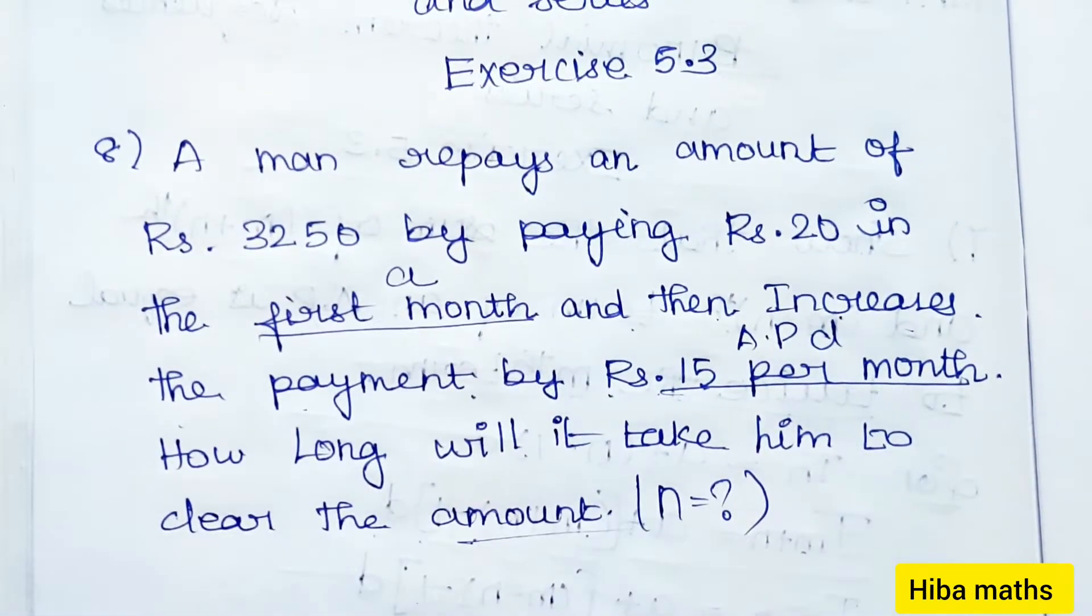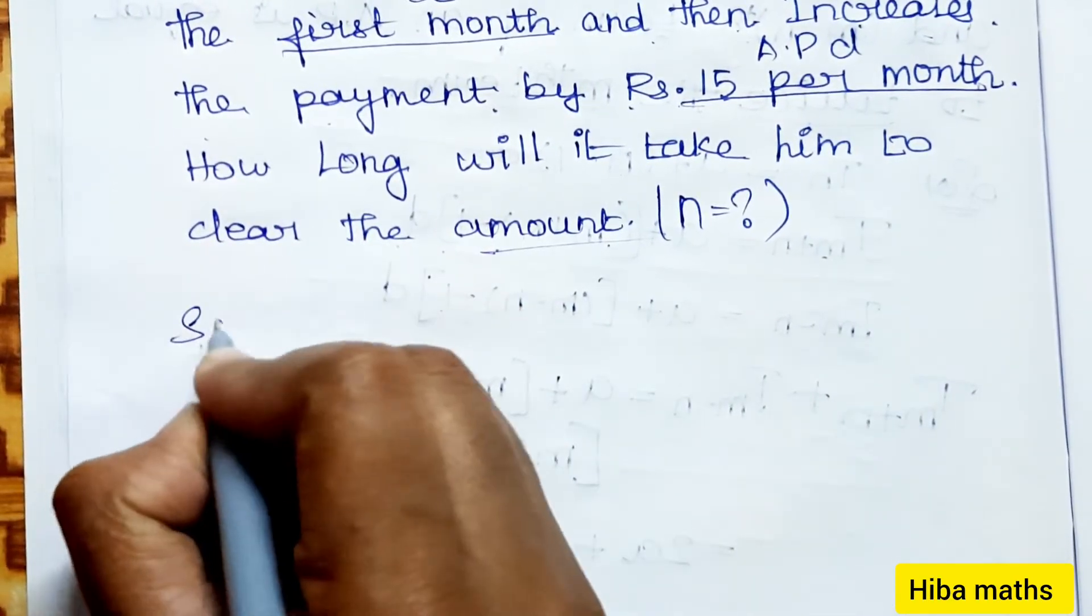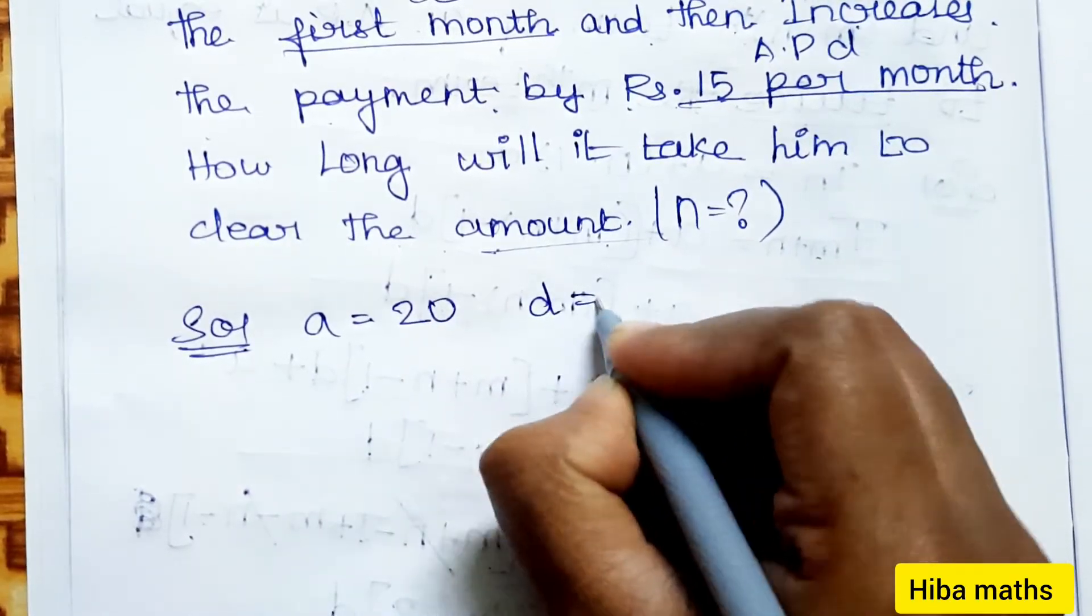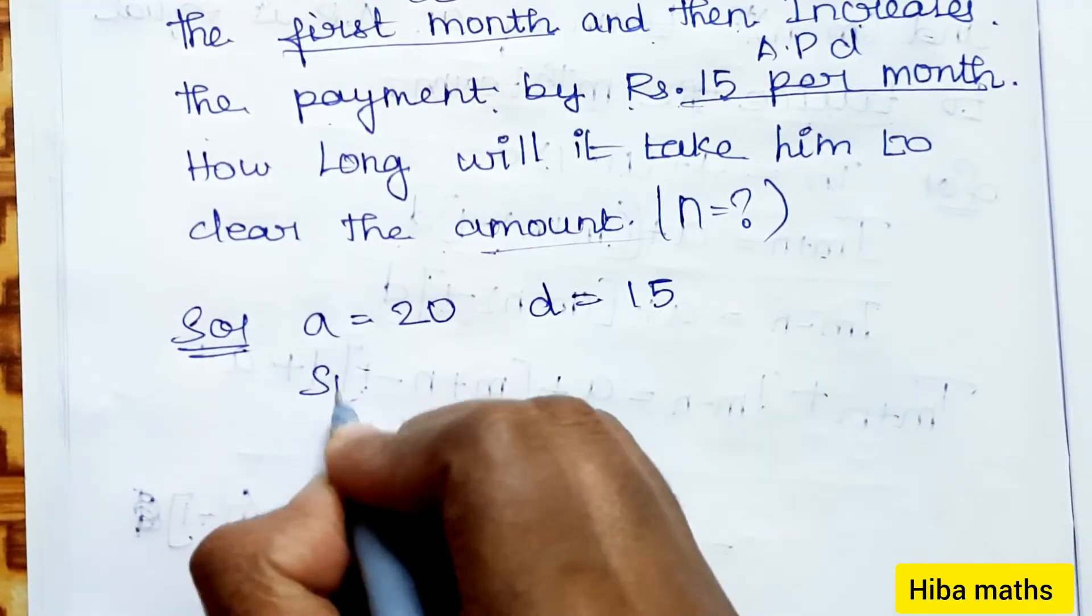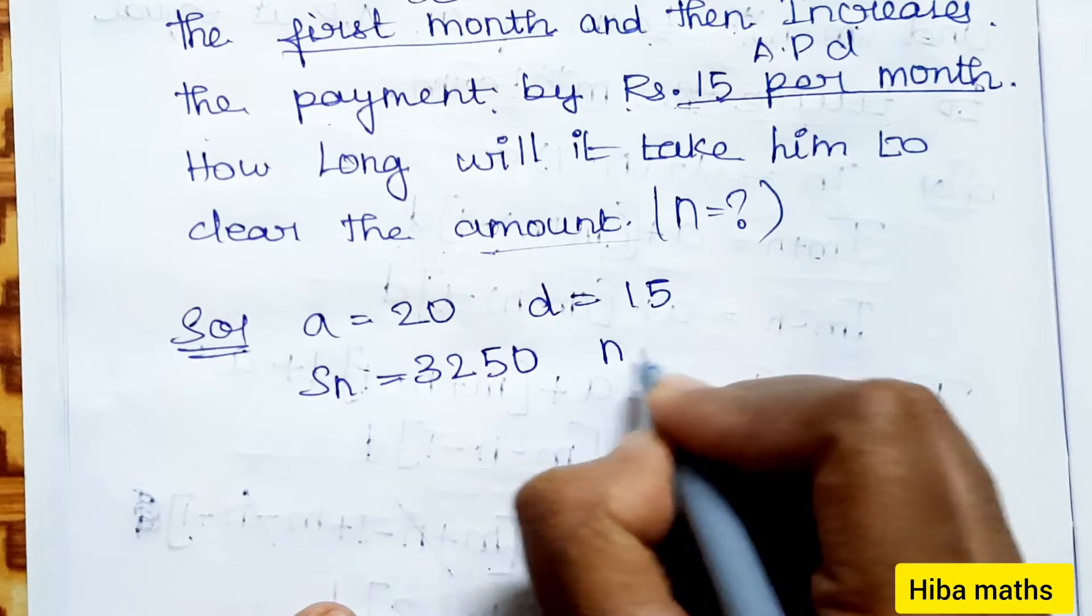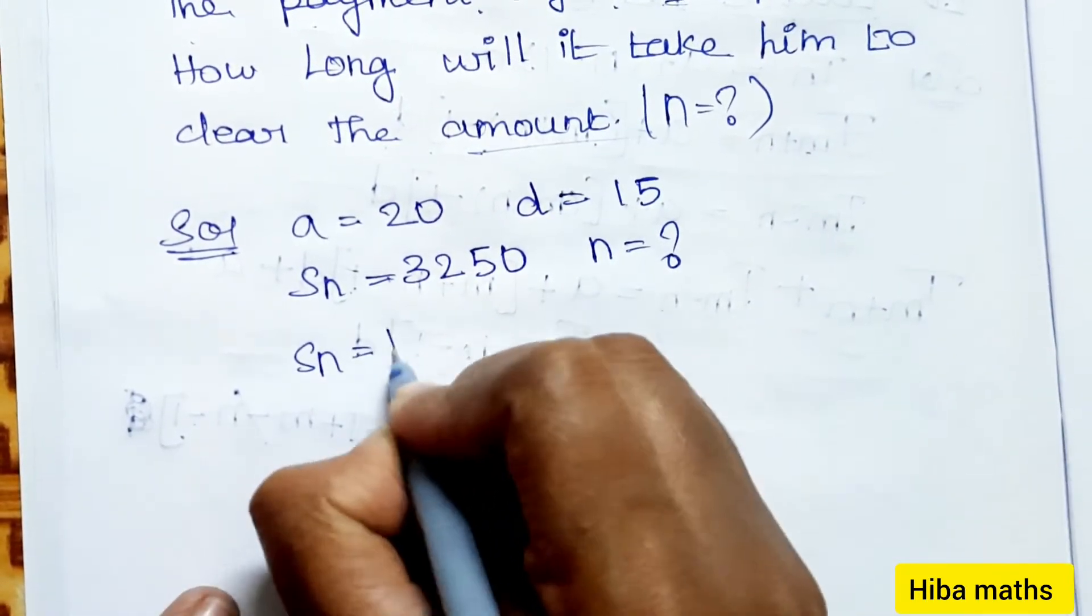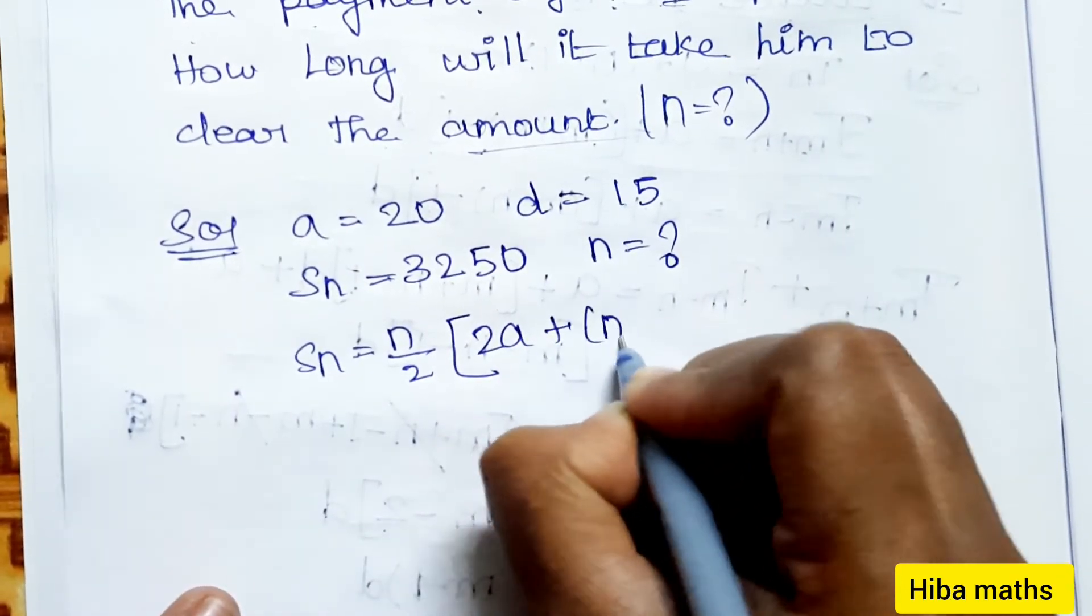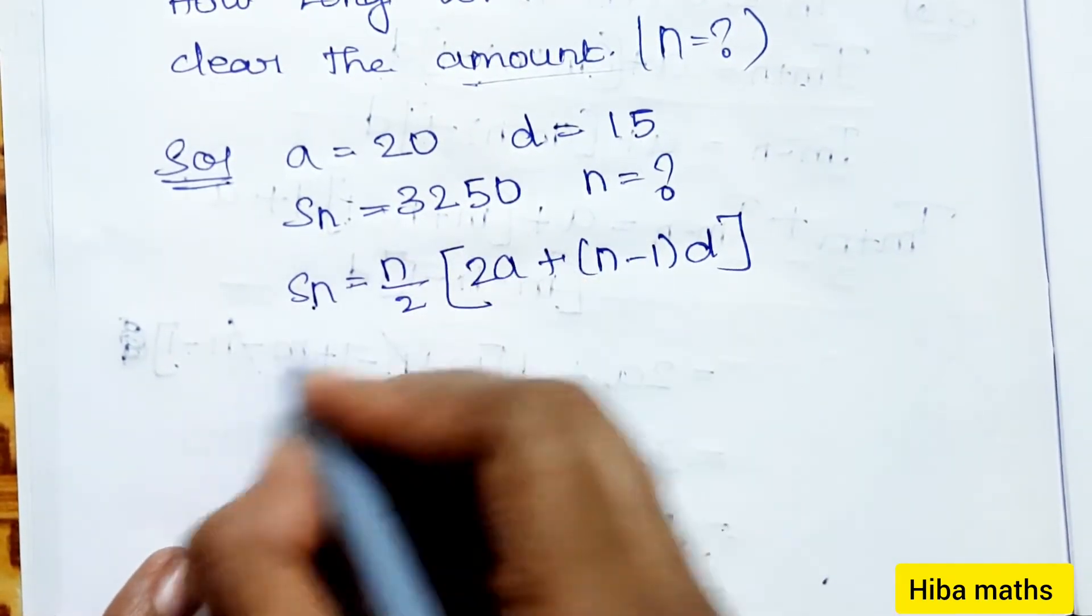In the solution, the value of a is 20, d is 15. Since this is an arithmetic progression, Sn = 3250 and n is what we need to find. The formula is Sn = n/2 times [2a + (n-1)d].